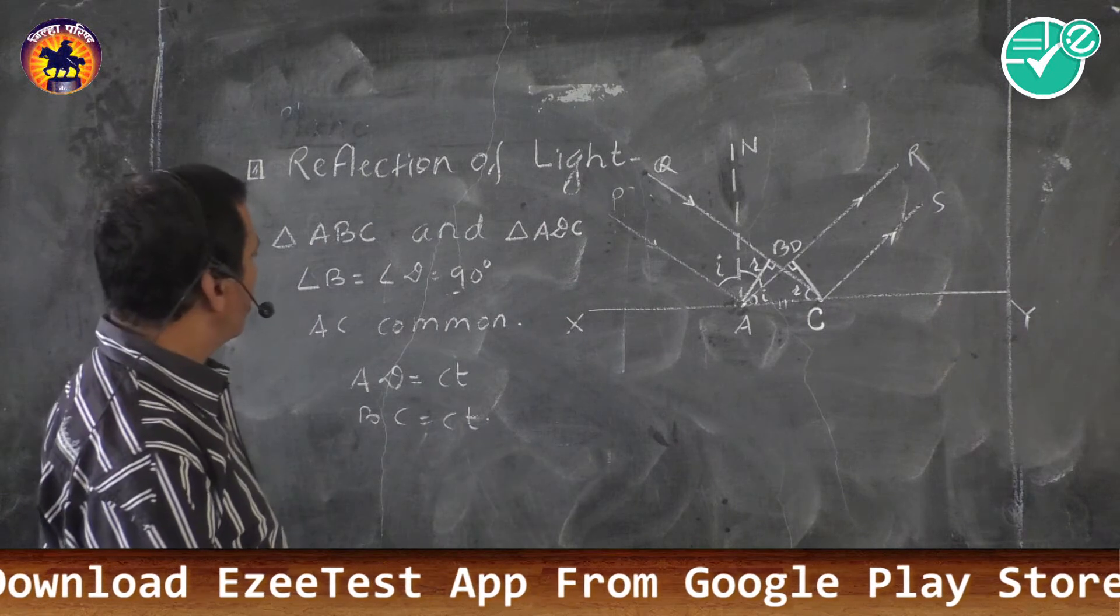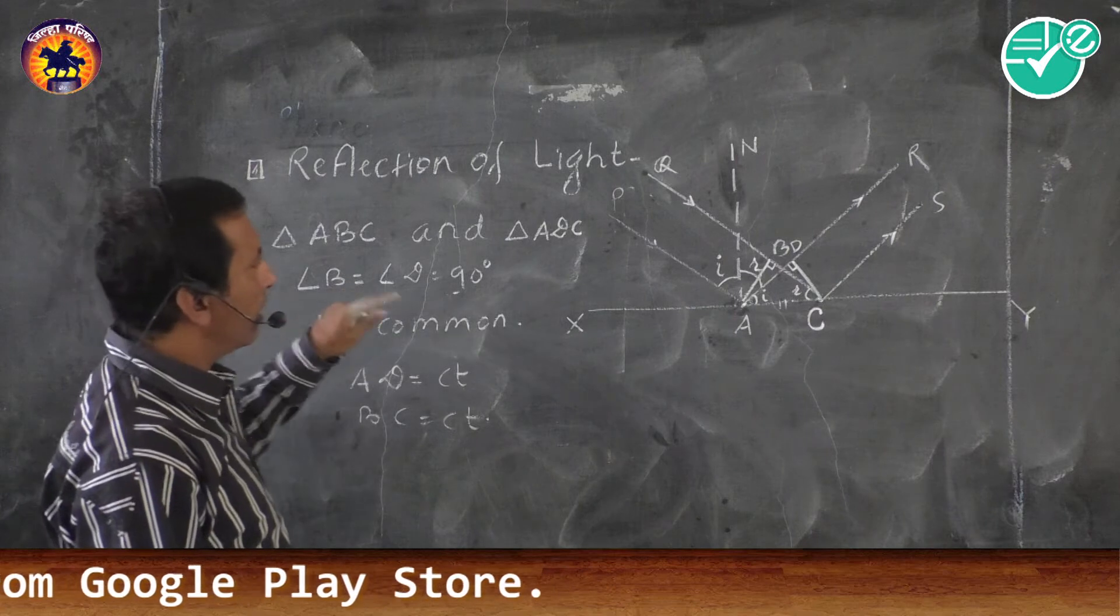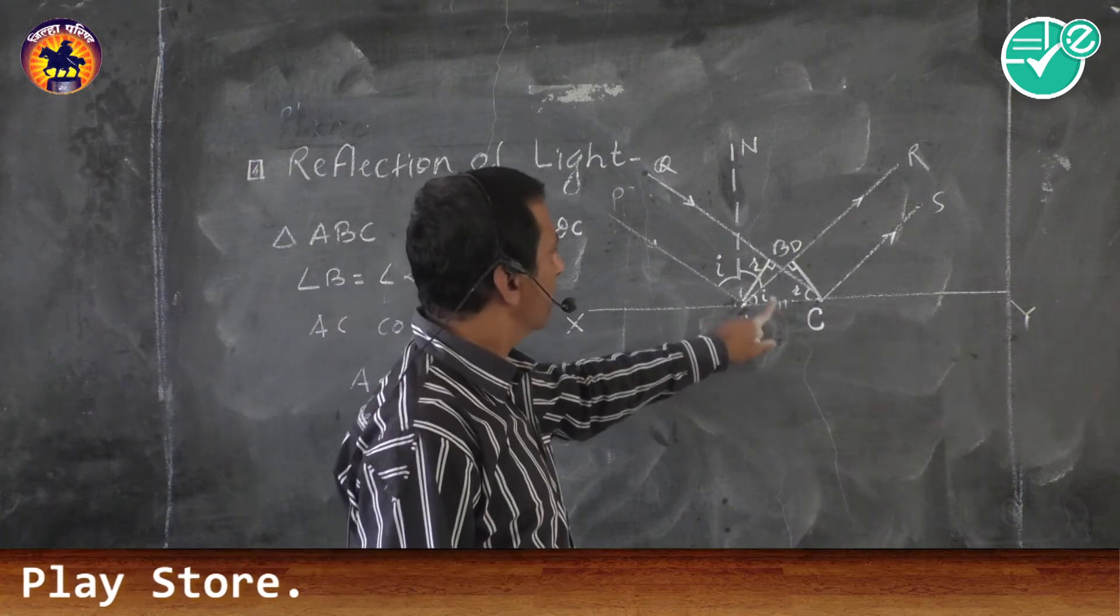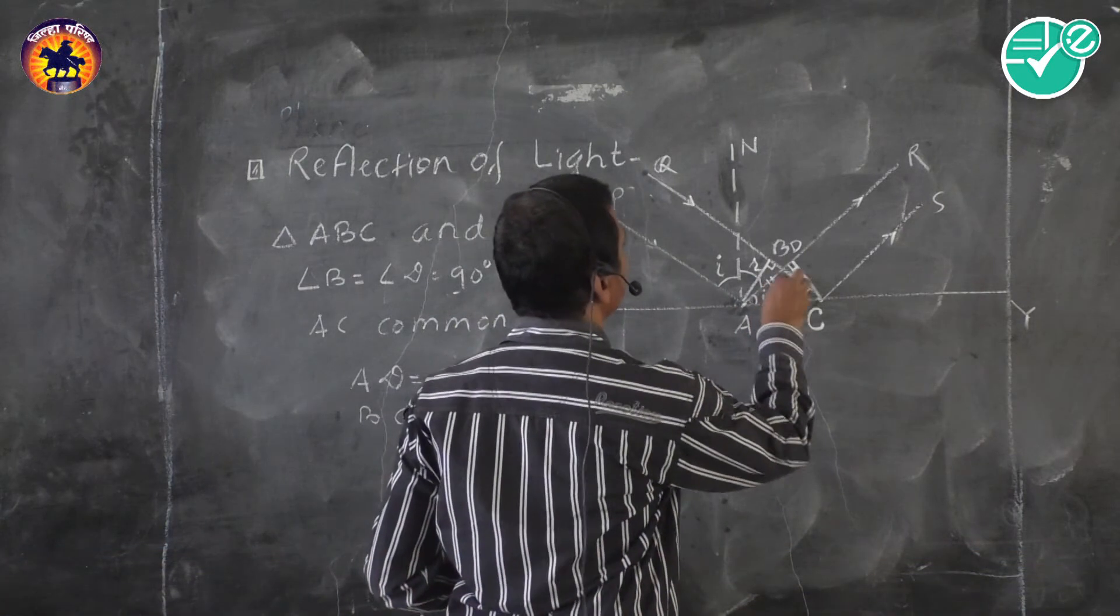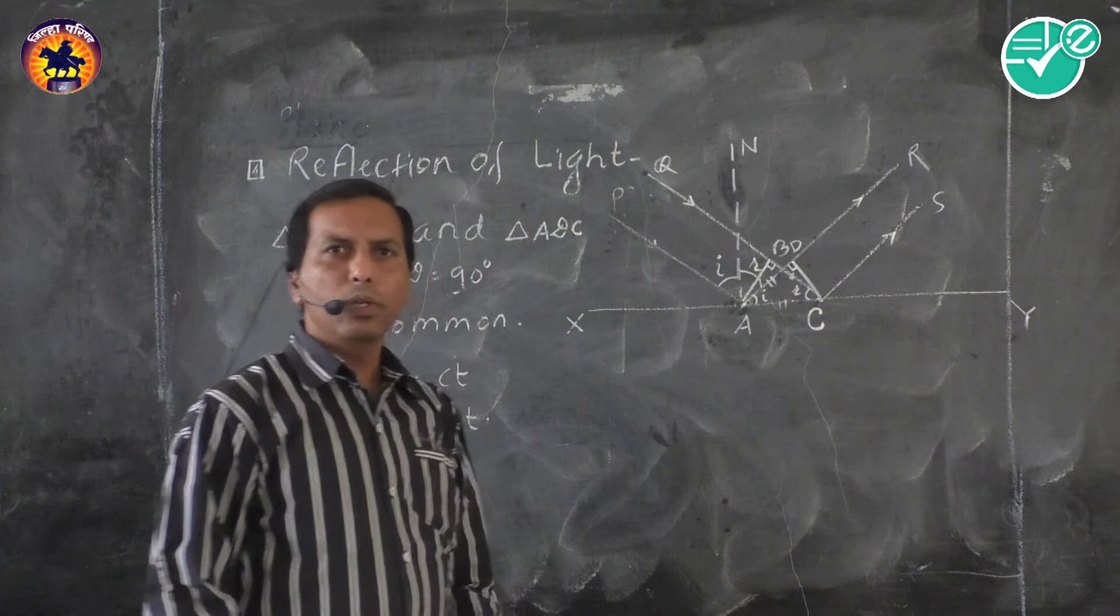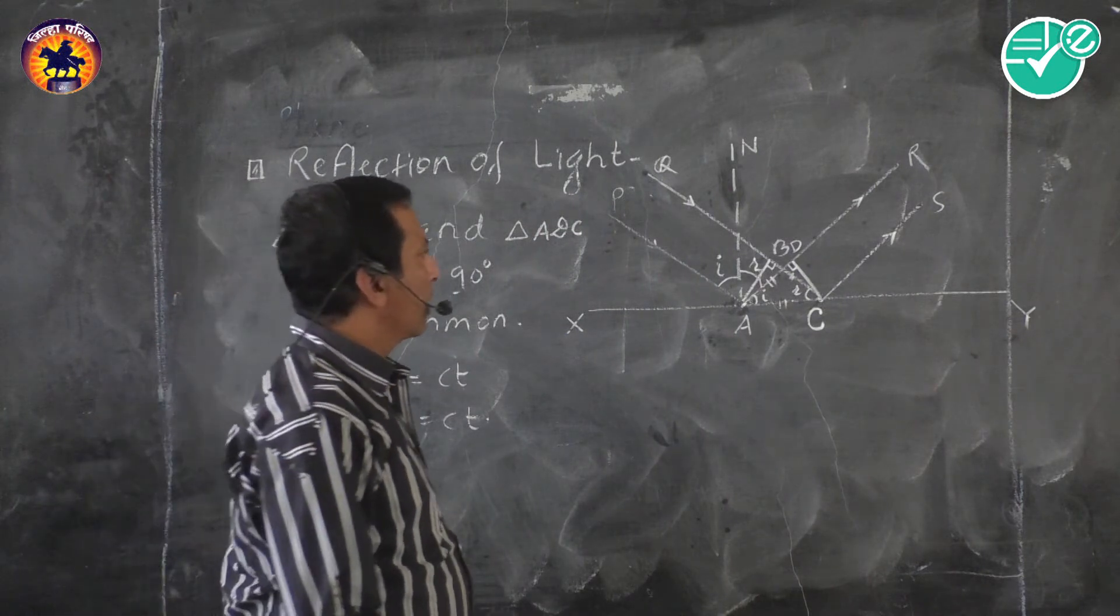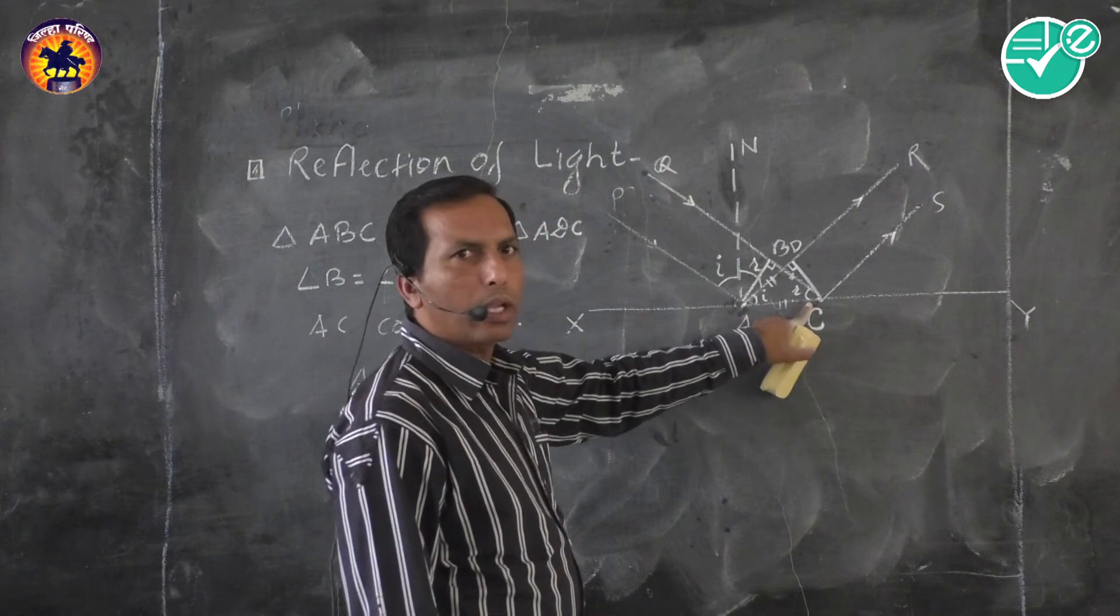This shows that two sides and one angle of two triangles are equal. Then angle A must be equal to angles.